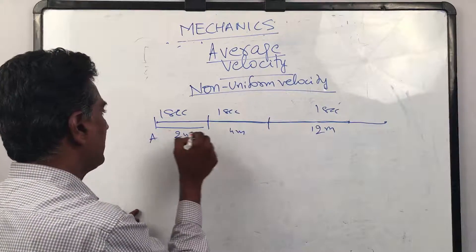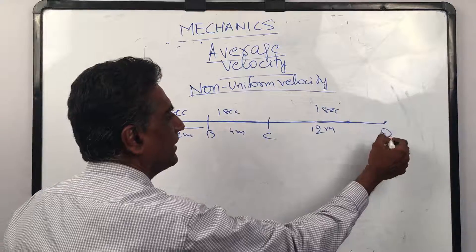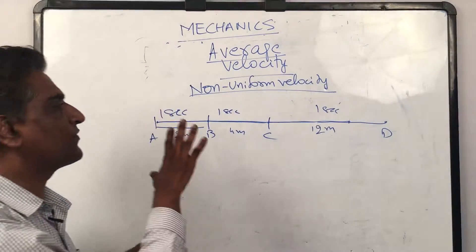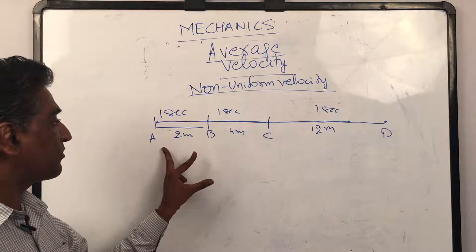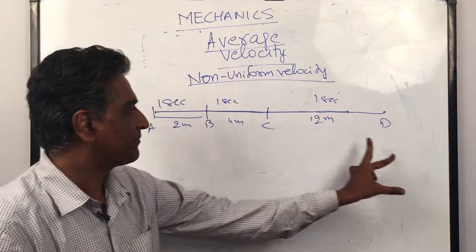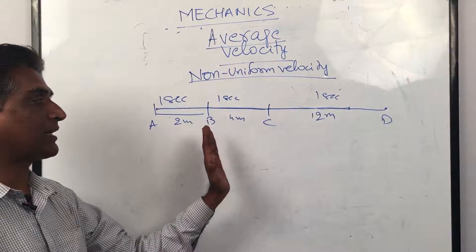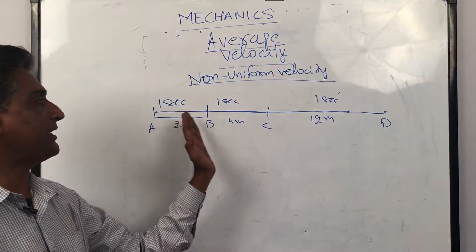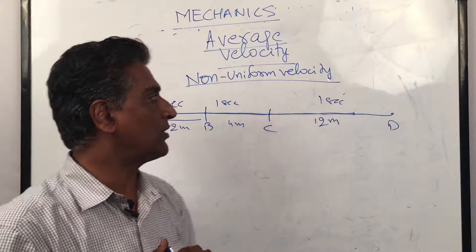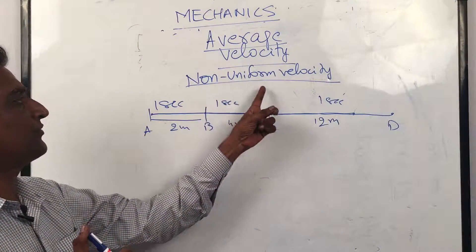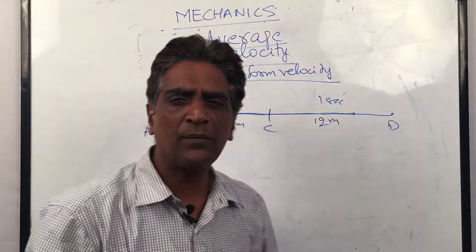This is A, B, C, D. Let's say the body went like this. This is obviously not uniform velocity—it did not cover equal displacements in equal intervals of time. So this can be called non-uniform velocity. Now suppose somebody asks, what was the velocity with which you traveled in this trip? Can I give one number?